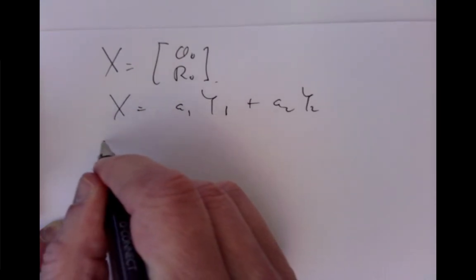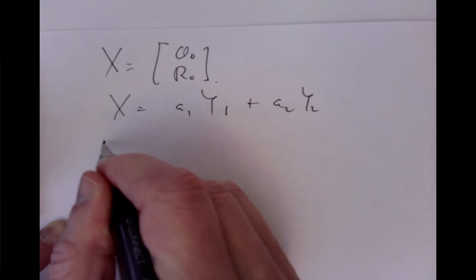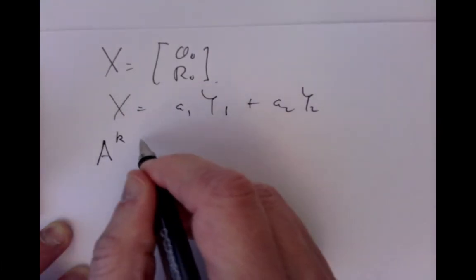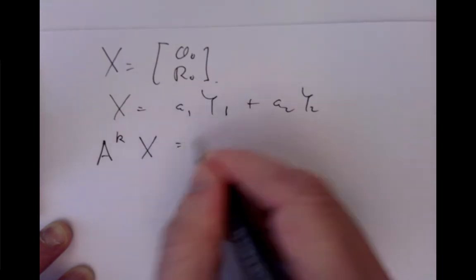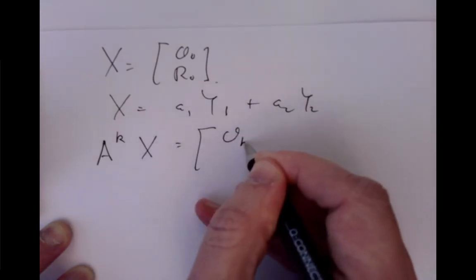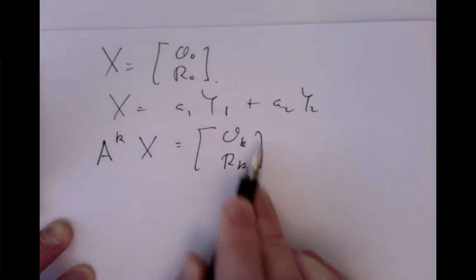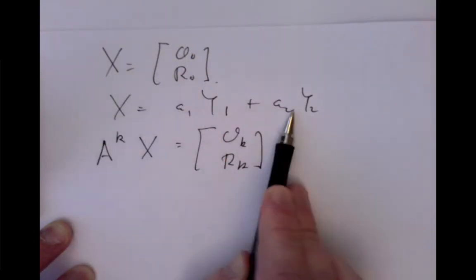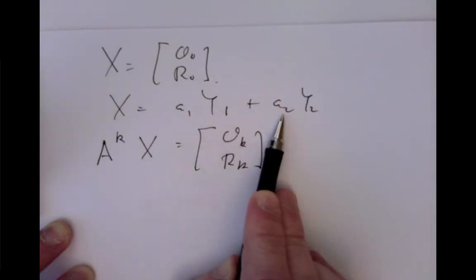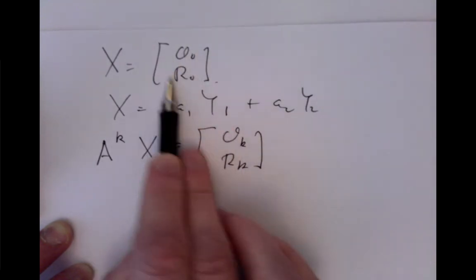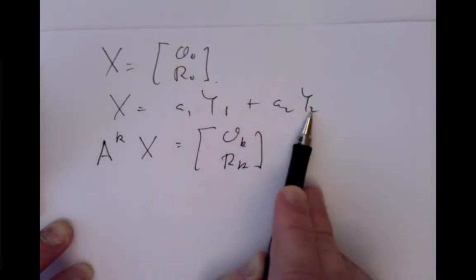And then we said that at a large number of months later, if we wait for thousands of months, we should expect that we get multiplied large number of times, A^k times x, is what happens after k months. So after k months, so we start at 0 months with these numbers. We calculate out the coefficients a_1, a_2 using linear algebra to figure out how to express, how to break that vector x up into a y_1 part and a y_2 part.